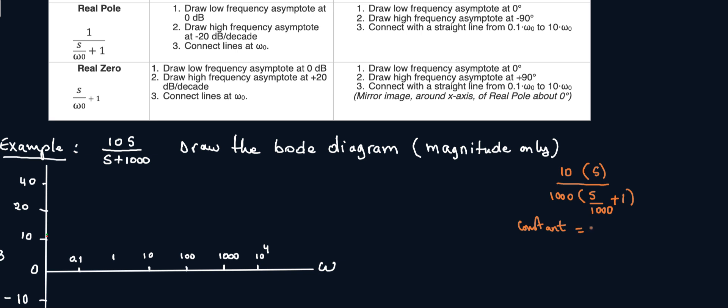So we have a constant here which is a 10, right? Over a thousand because this is what your constant is. So that's 1 over 100.